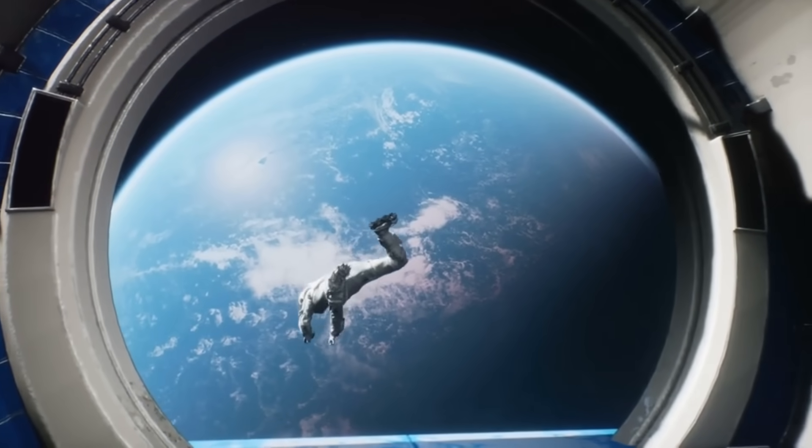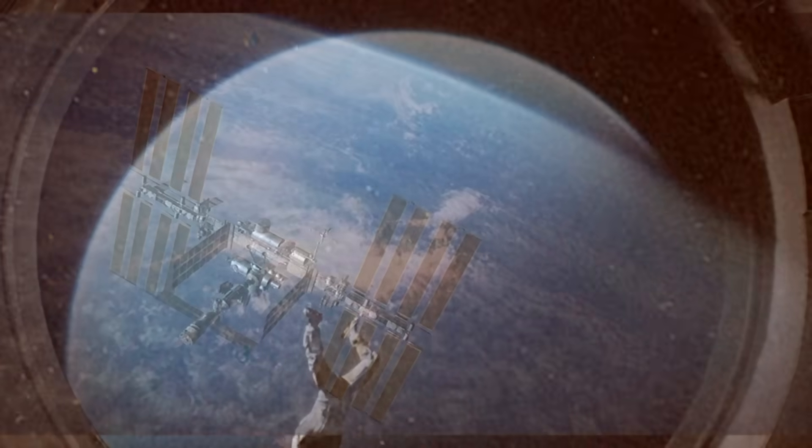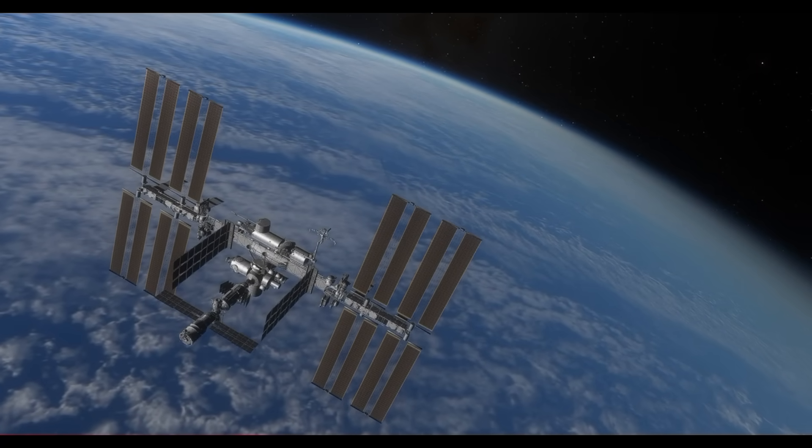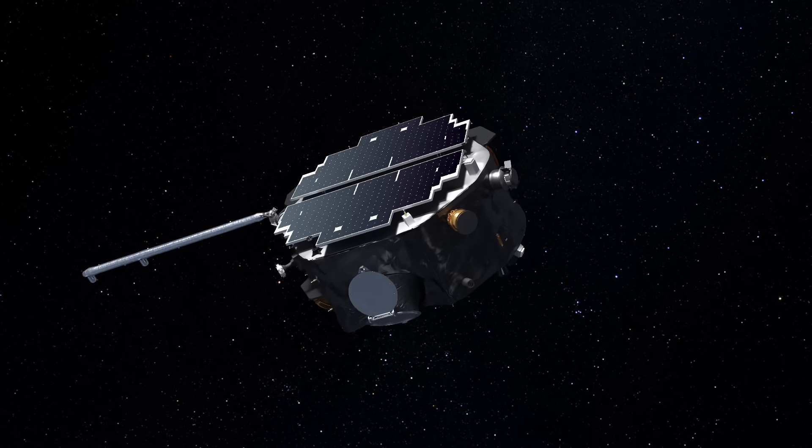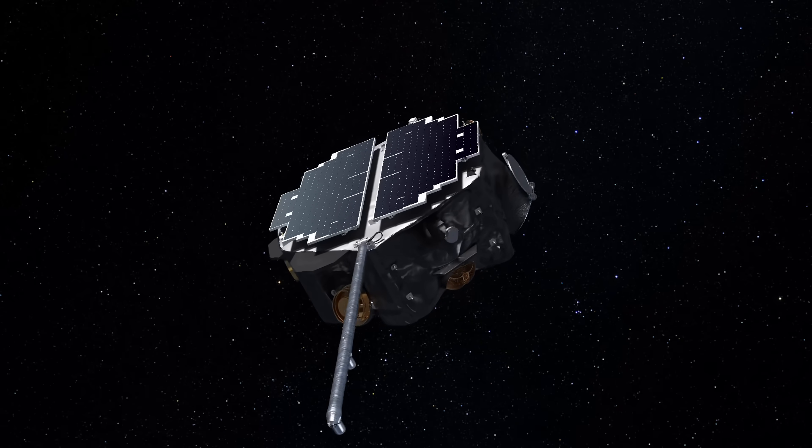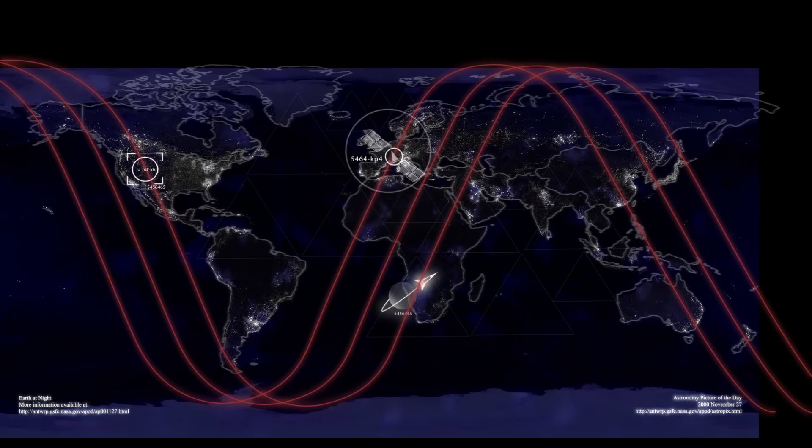Now, you might be asking yourself, why is this so significant? Think back to the Apollo era. Each Saturn V cost roughly 1.2 billion dollars in today's money. After every launch, whether successful or not, it ended up in the Atlantic Ocean. Done. Thrown away, just like a disposable rocket was supposed to work.